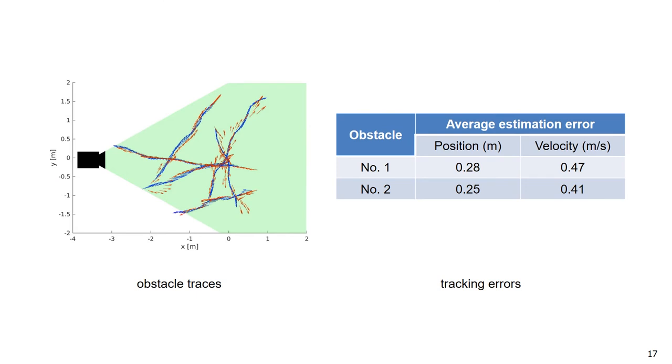We first evaluate the obstacle detection and tracking performance by comparing the detection results with ground truth data. The left figure shows the obstacle traces, and the right figure shows the average estimation errors of the two obstacles. It can be observed that the average position estimation error is around 0.3 meters, and that of the velocity can be up to 0.5 meters per second, which indicates that the obstacle sensing uncertainty should be taken into account when planning robust collision-free trajectories for the MAV.